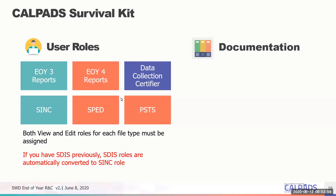Additionally, you may need to have the PSTS role assigned to your account. Because you would be expected to be the most knowledgeable person for students with disabilities as far as CALPADS is concerned, you may need the data collection certifier role, which you may not have had for fall one. At a minimum, any access that you need, you need to discuss with your LEA administrator — most of you would probably associate that as your SIS person.